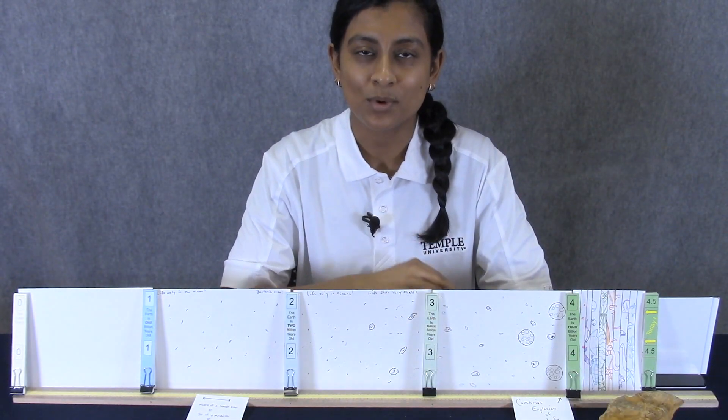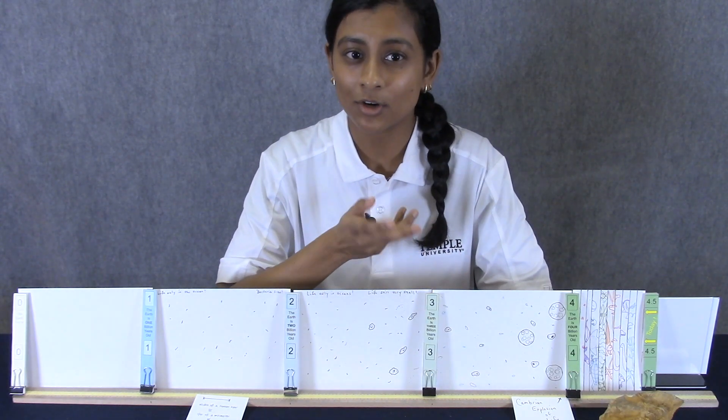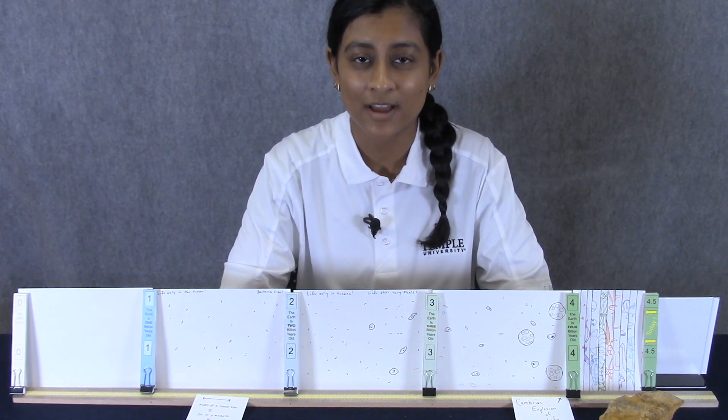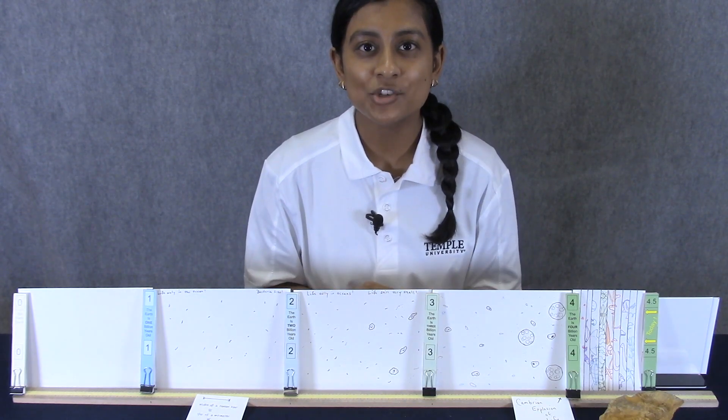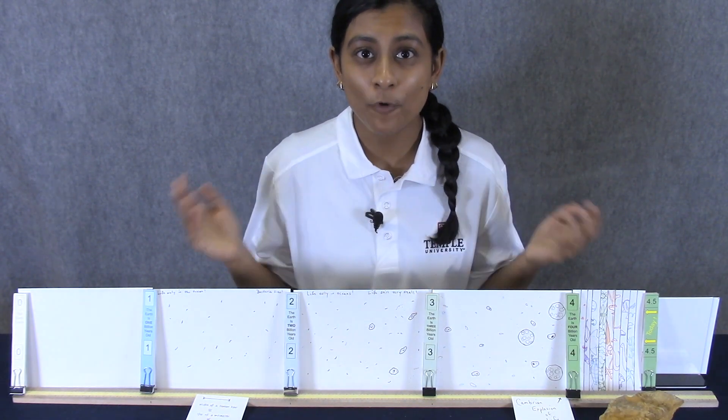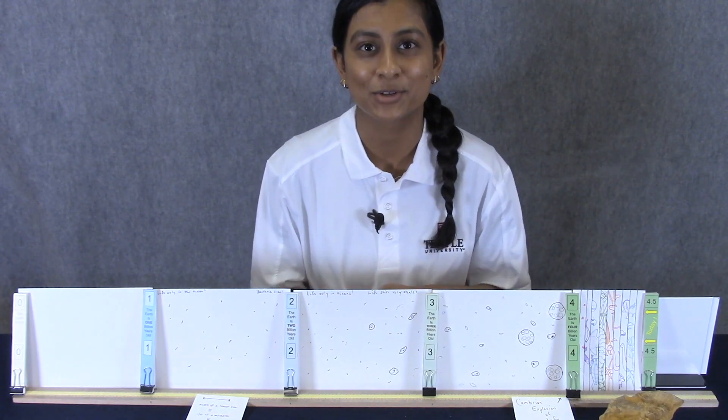By studying the oldest rocks that geologists have found here on Earth, and rocks that have been found on the moon and in meteorites, geologists estimate our Earth is about four and a half billion years old.